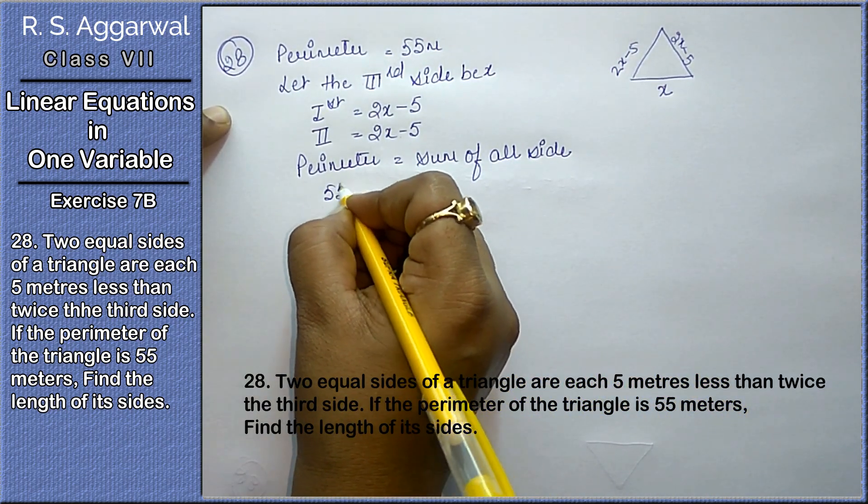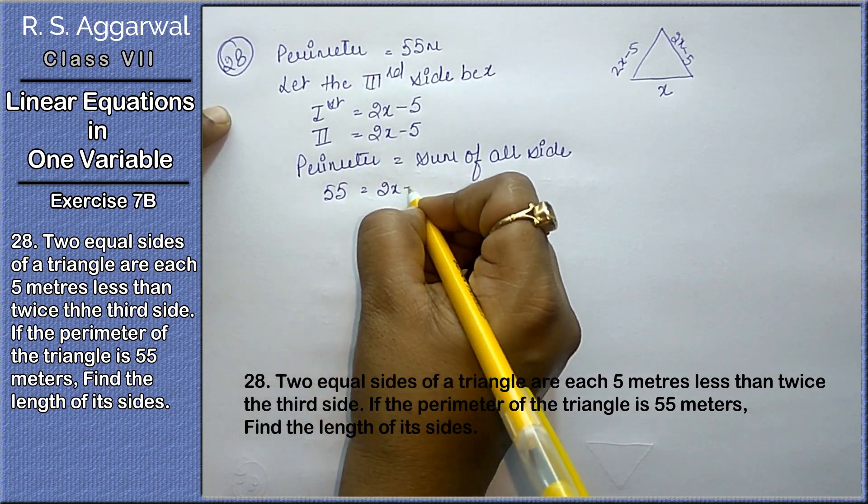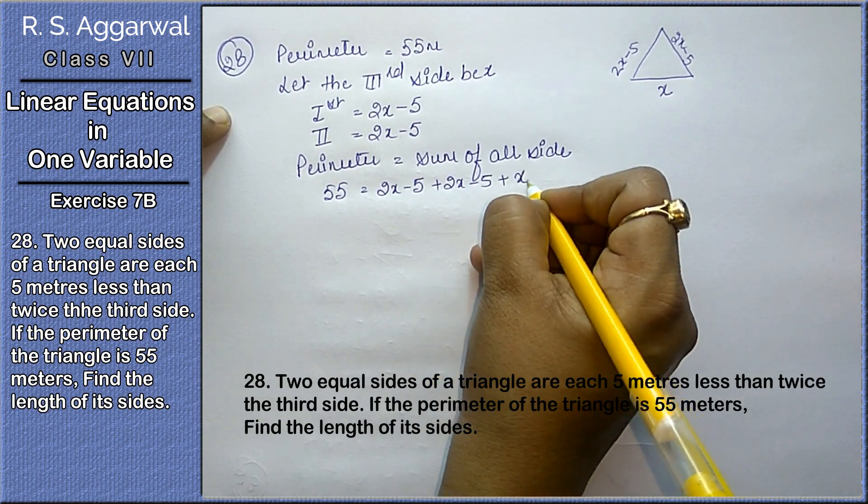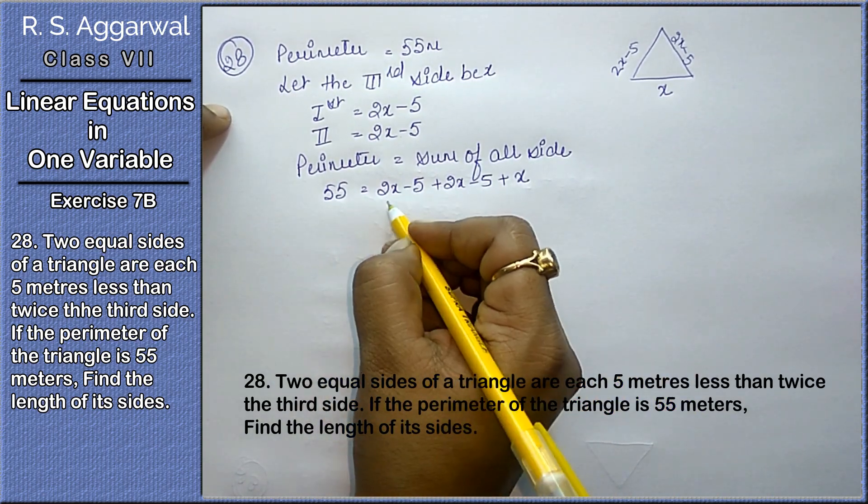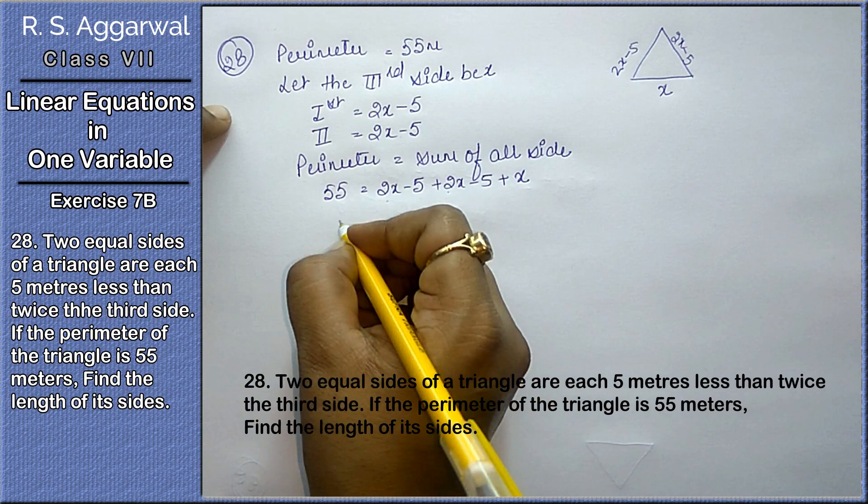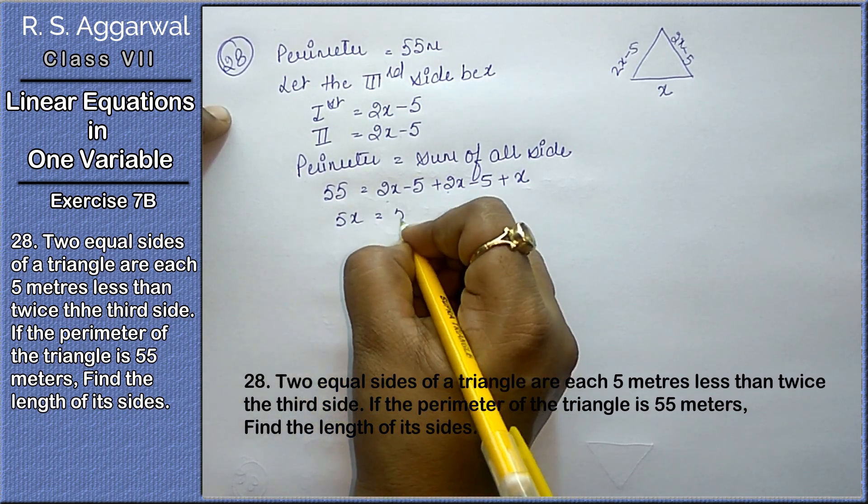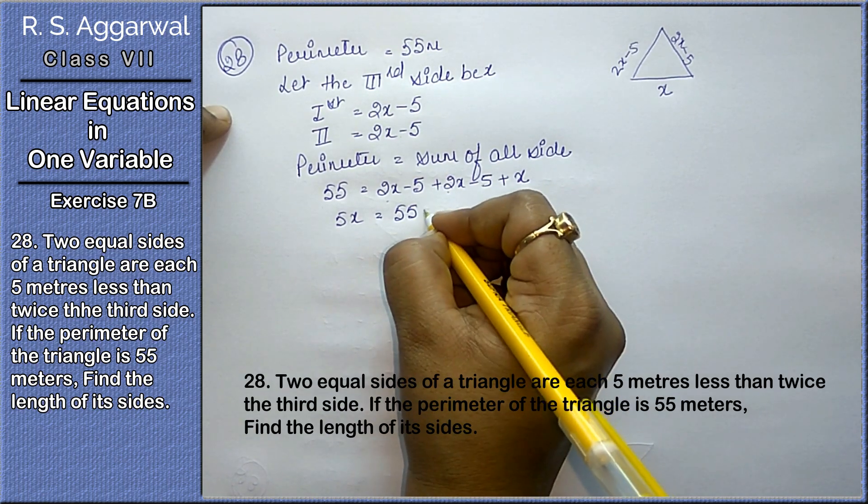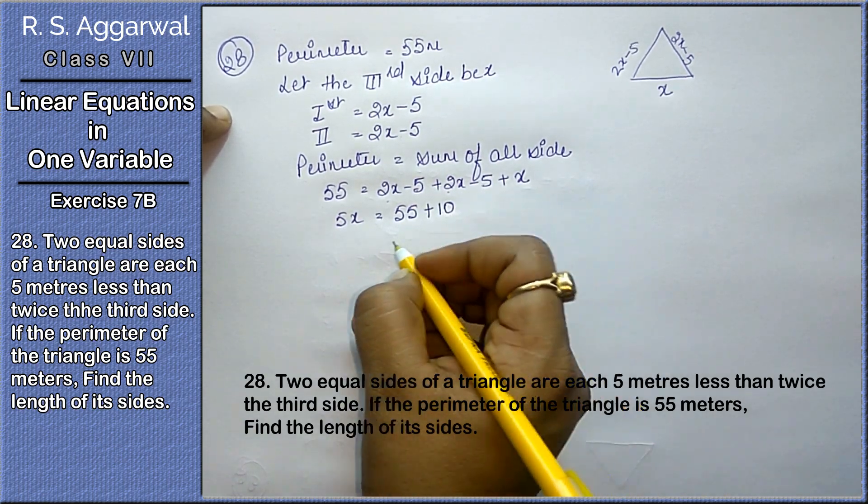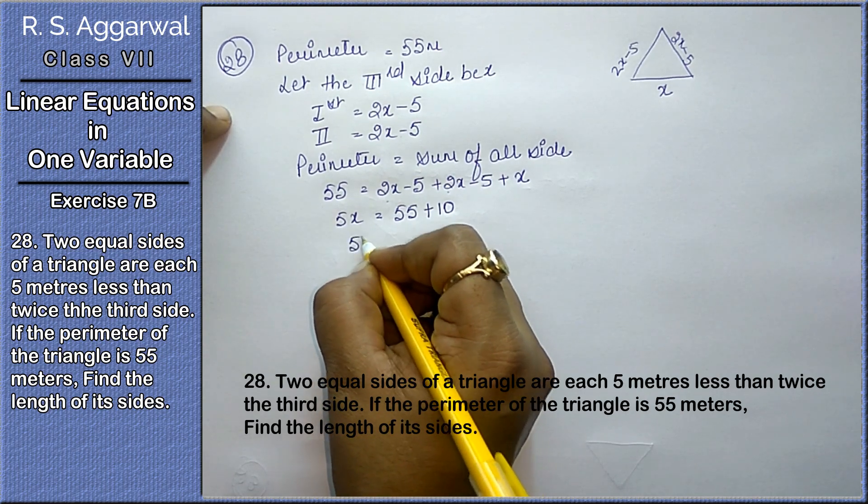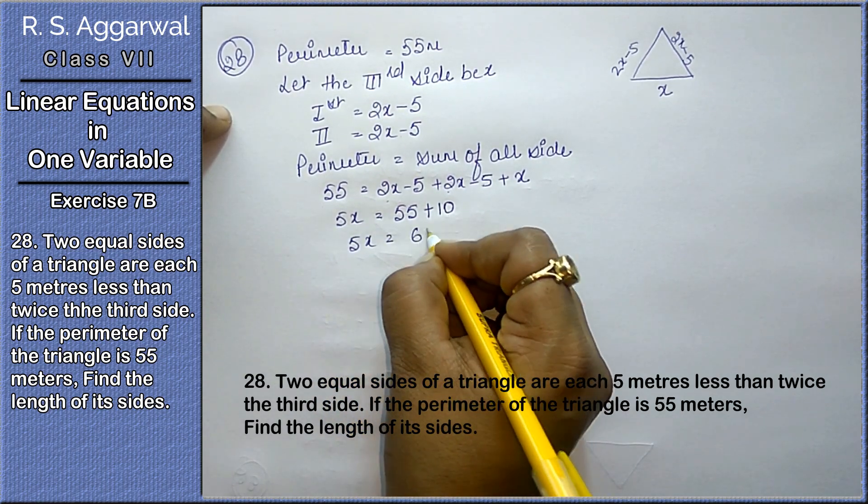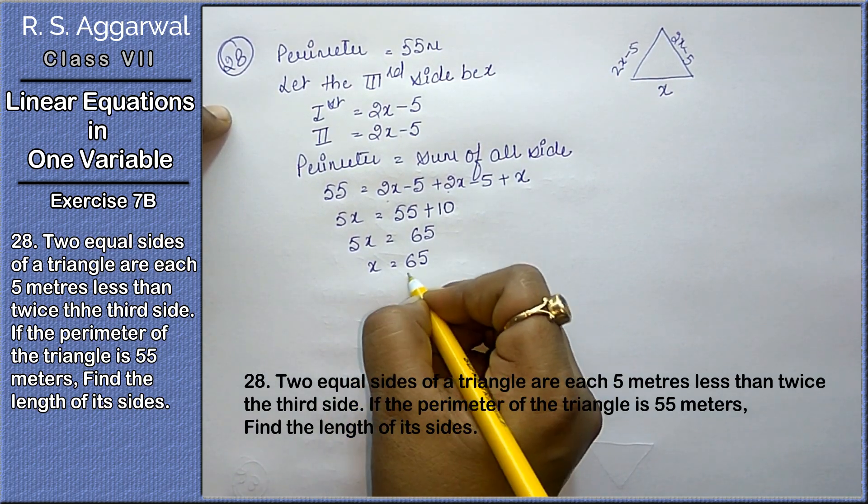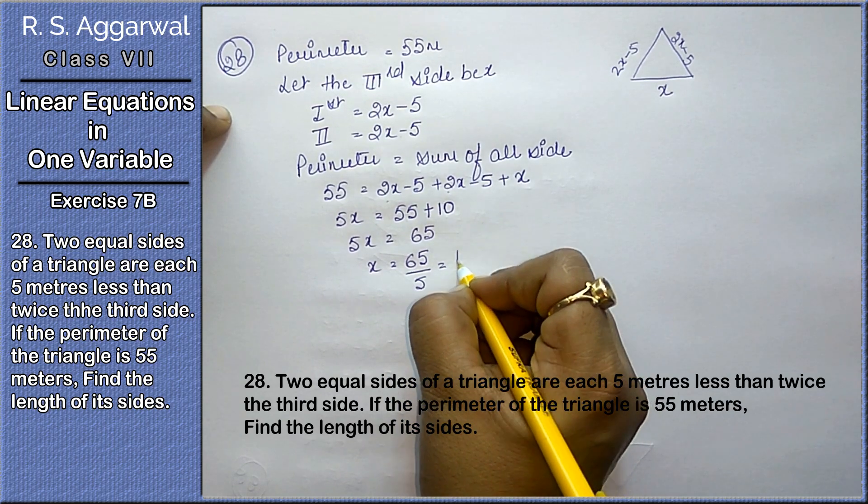So 55 equals to first side plus second side plus third side. Now, x terms are 2x plus 2x plus x, that is 5x equals to 55 minus 5 minus 5, minus 10. It will become plus 10. So 5x equals to 55 plus 10 is 65. x equals to 65 upon 5, that means 13.